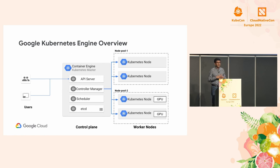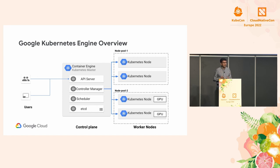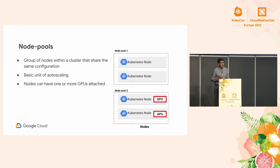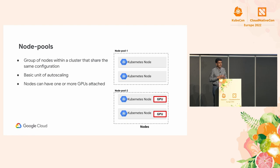Let me quickly walk you through the architecture of Google Kubernetes Engine. GKE is a fully managed container orchestration platform provided by Google. It has two main components: control plane and data plane. The control plane comprises master nodes, API server, scheduler, etcd, and many other services. The control plane provisions the data plane, which comprises worker nodes — the place where workloads run. Worker nodes are grouped together as a node pool, and all nodes in a pool share their configuration. Node pool is also the basic unit of auto-scaling.